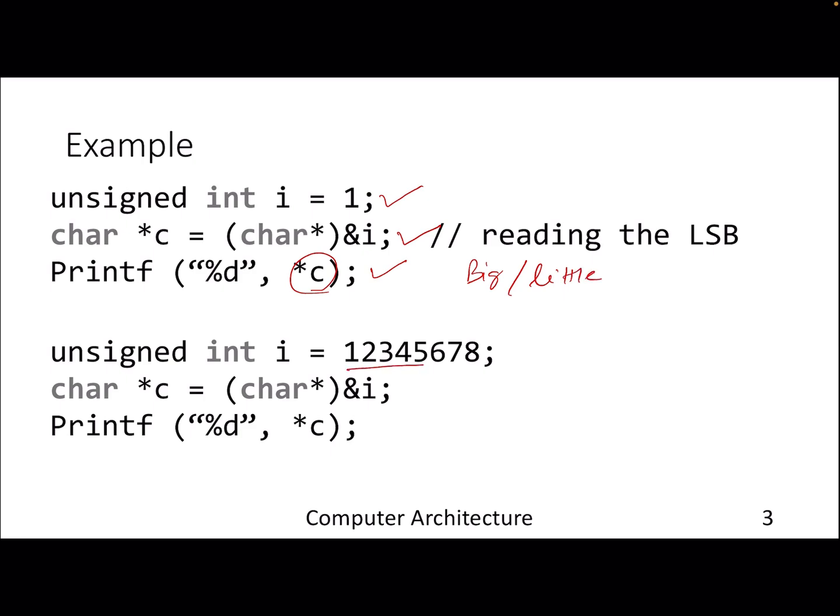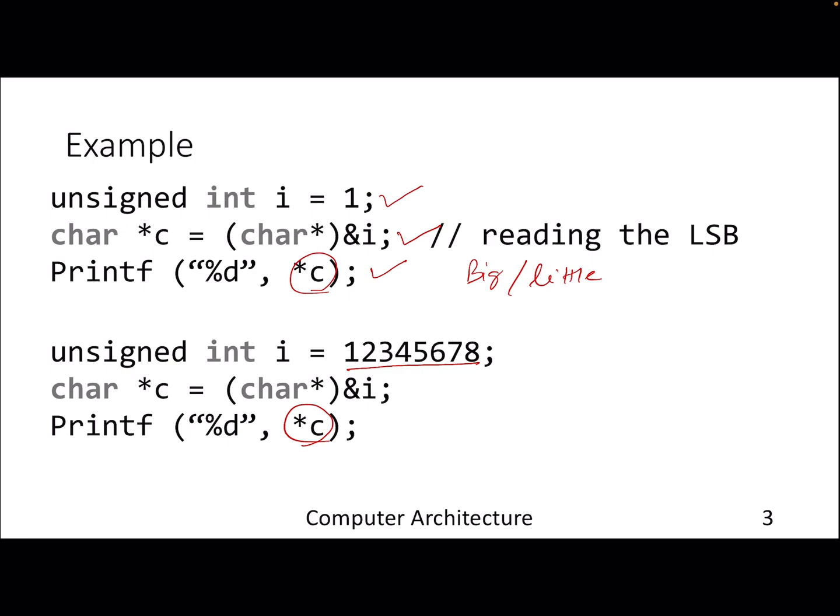Similarly, if we are storing a larger constant and converting that into a character pointer so that we will have the byte ordering, and finally we are printing the content of the character pointer. As you can see, the little endian will become one because little endian starts from this particular direction, whereas the big endian goes from left to right, the big endian will output zero.